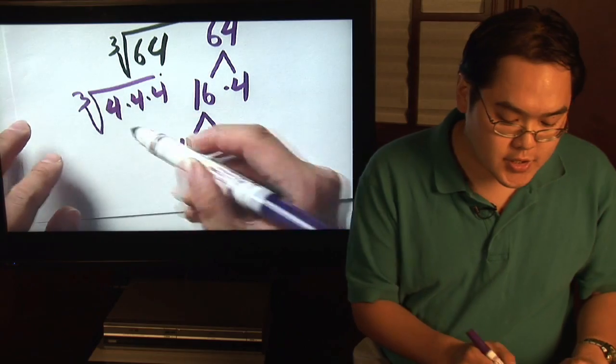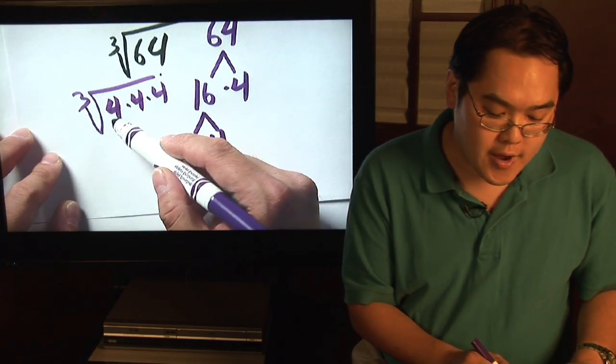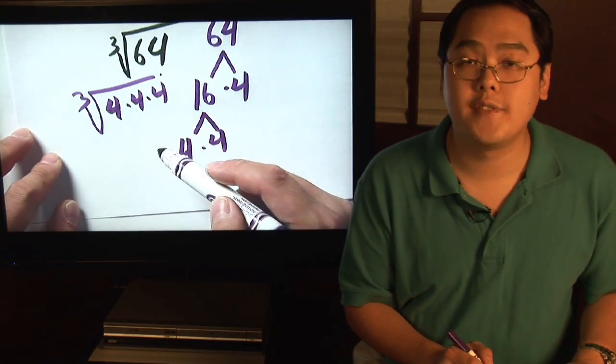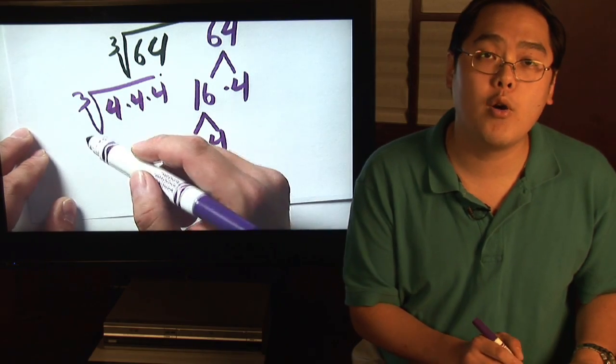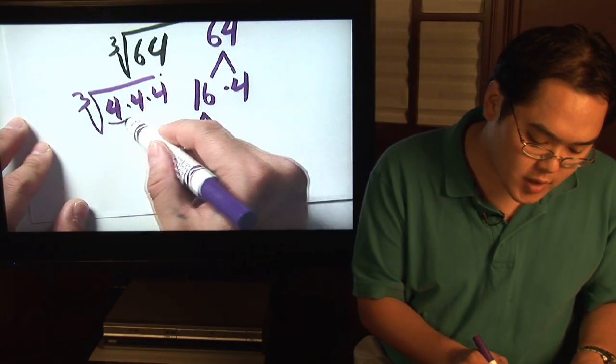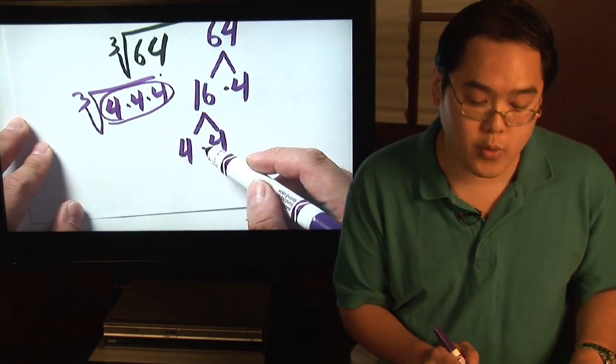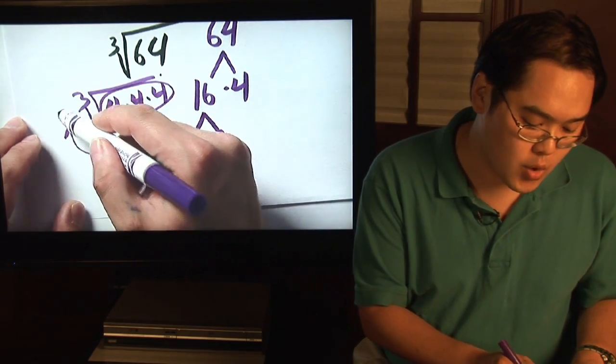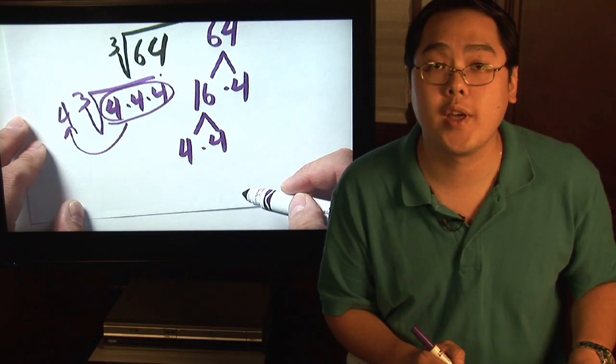With cube roots, since it is a cube root, that means for every three of the same number, you can pull out one and there'd be nothing left. In other words, because there's three fours, you can pull one of them out and the whole thing would be done.